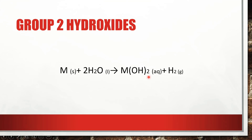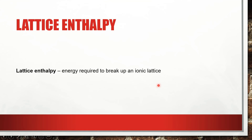We have two hydroxide ions for each metal cation in Group 2, because our Group 2 metal has a 2+ charge and our hydroxide only has a 1− charge. So we need two hydroxides to cancel out that 2+ charge on the Group 2 metal to create a neutral compound. Our Group 2 hydroxide is in the aqueous state.